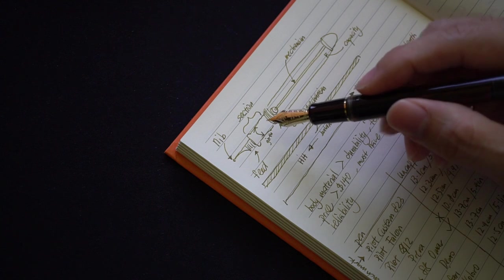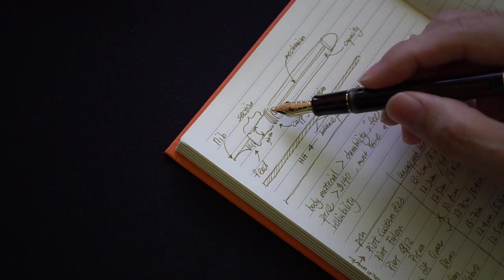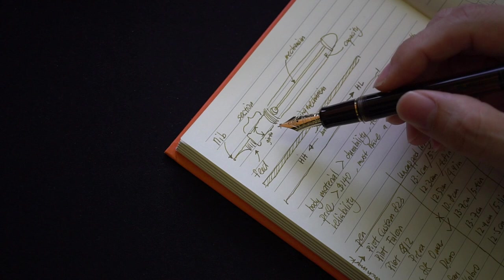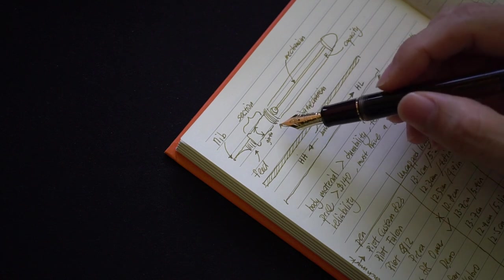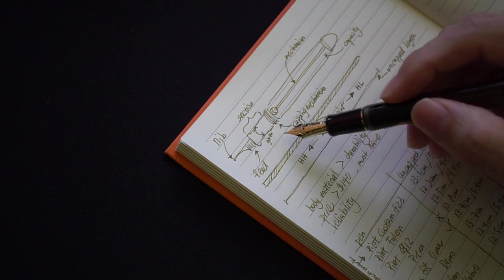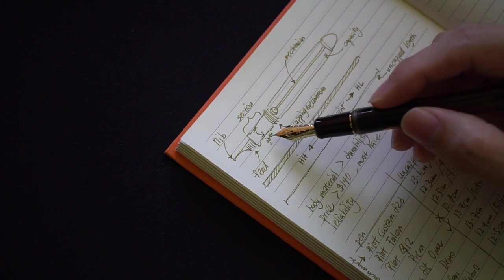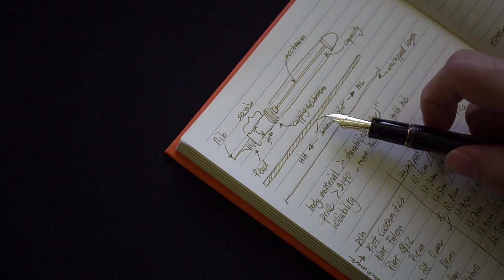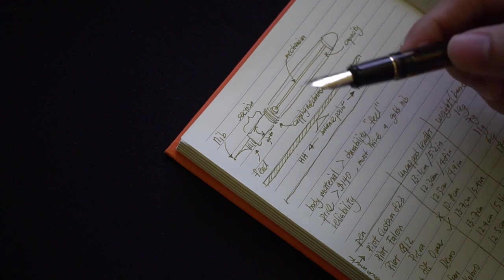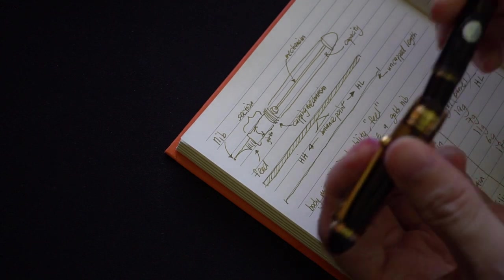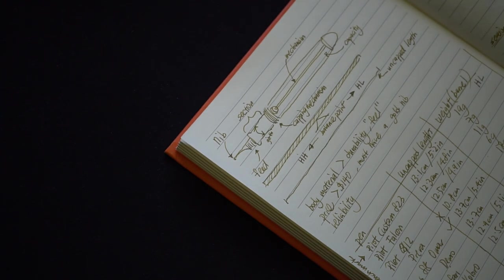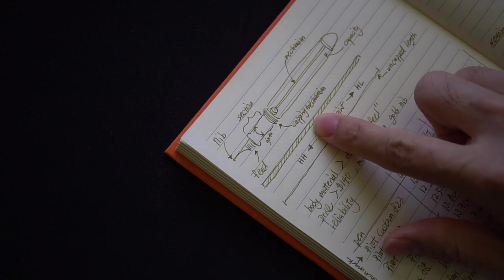Other things that you want to take note of is obviously the section length and the girth. Lots of websites out there, and I'll go through one of them later on in the second part of the video. They give you the section length, but not many of them actually measure and give you the section length. Other things to take note of when buying a pen, this 823 is actually a screw-on cap and you might like that. You might not like pens that are snap caps. So that's also an important thing to take note of.